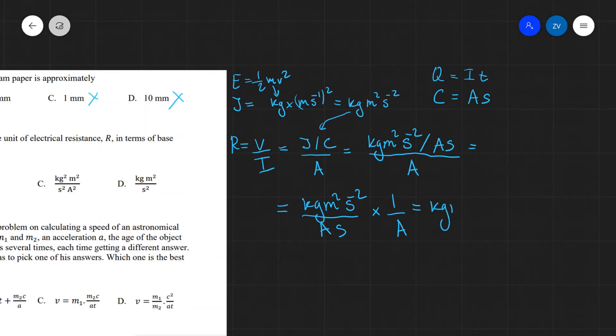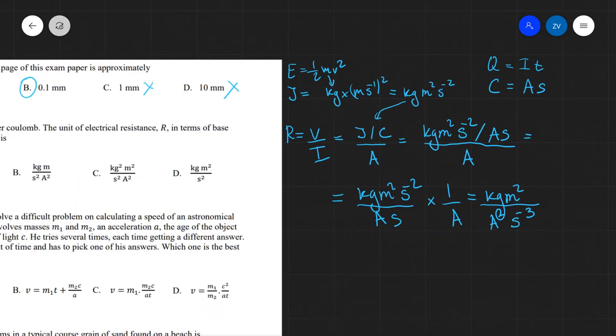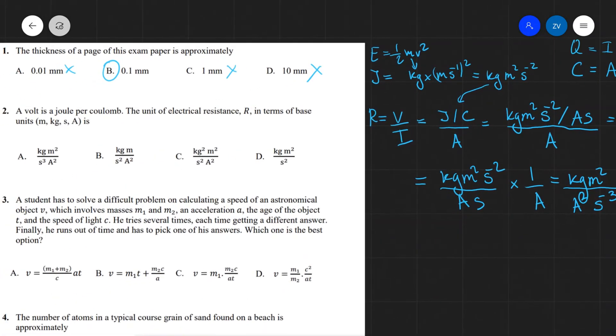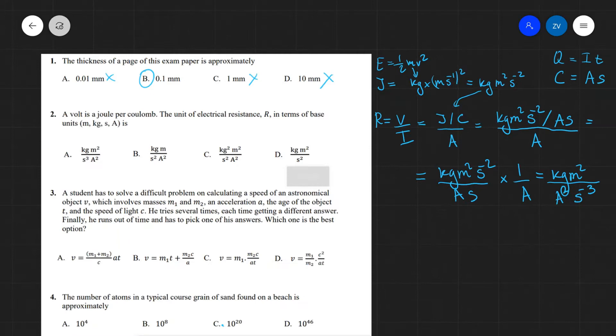This will equal to kg m squared. Let's bring this s to the power of minus two down there. And what we're going to get is when we times the two a's, a squared s to the power of minus three. So this will be equivalent to our answer being a.